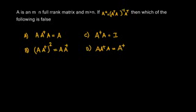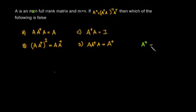This question was asked in the Electrical 2008 paper. A is an n by n full rank matrix with n greater than n. We are given that A plus is defined as A transpose times (A transpose A) inverse times A transpose. Then we are asked to find out which of the following is false, so we have to check these options to see which of them are correct.